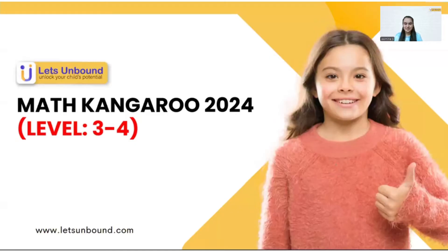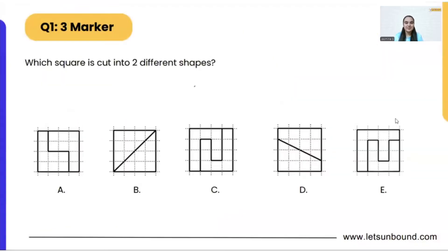Hello everyone, welcome to a new video. Today we are going to solve three marker problems from the Math Camp 2024 exam for grades 3 and 4. Let's get started with the very first question: which square is cut into two different shapes? They have provided us four squares and we have to identify which one is cut into two different shapes. This question is very interesting — let's see how we can solve it.